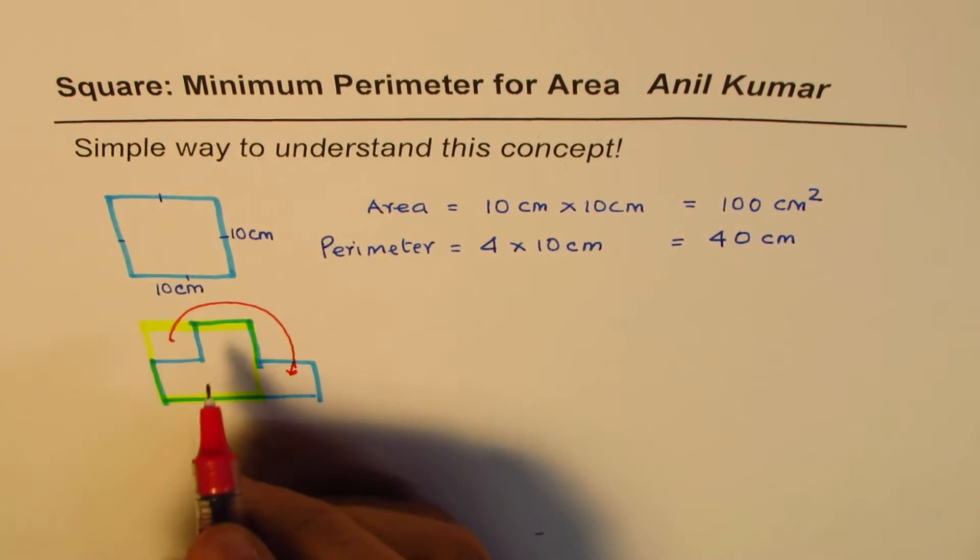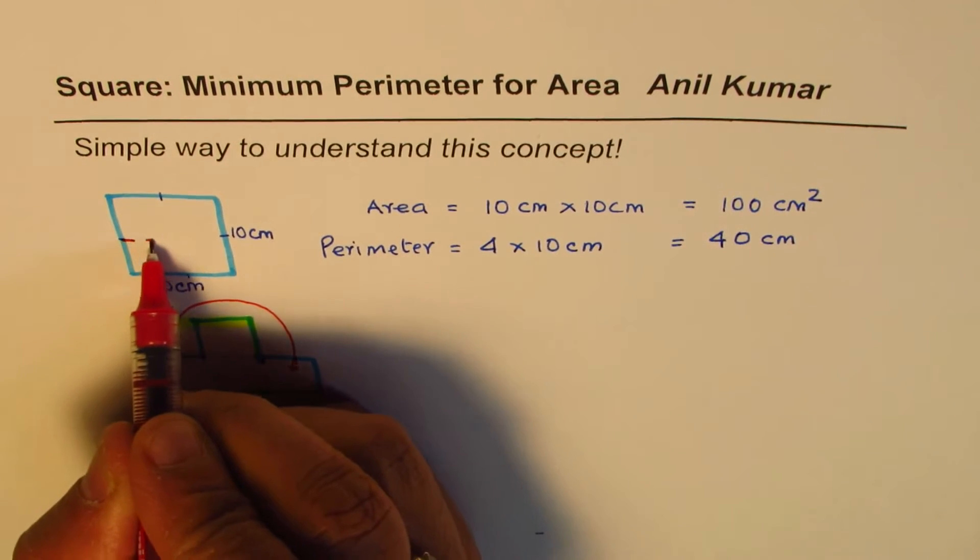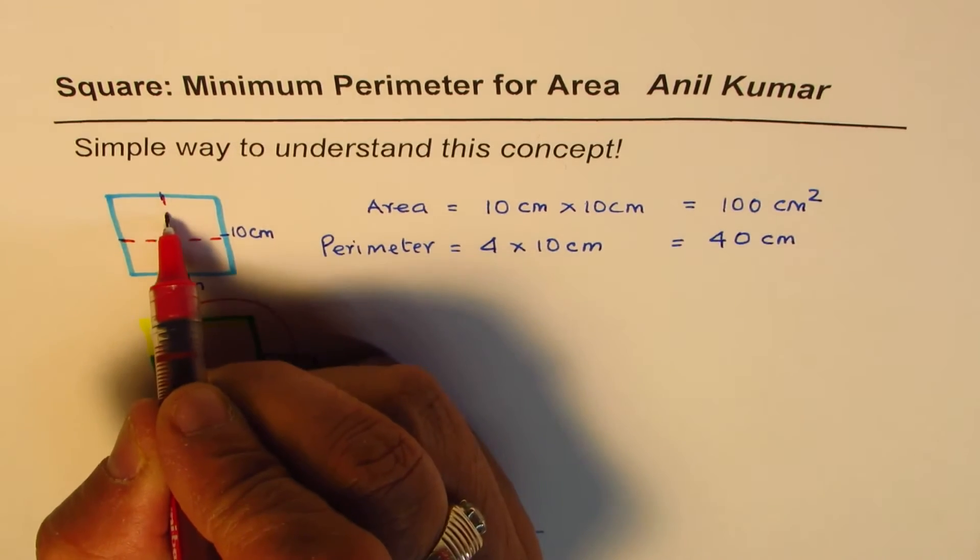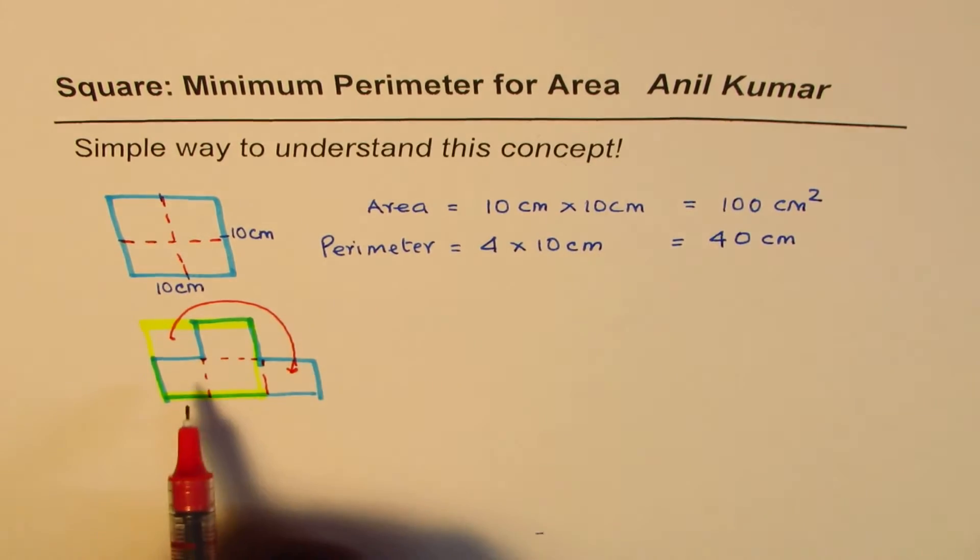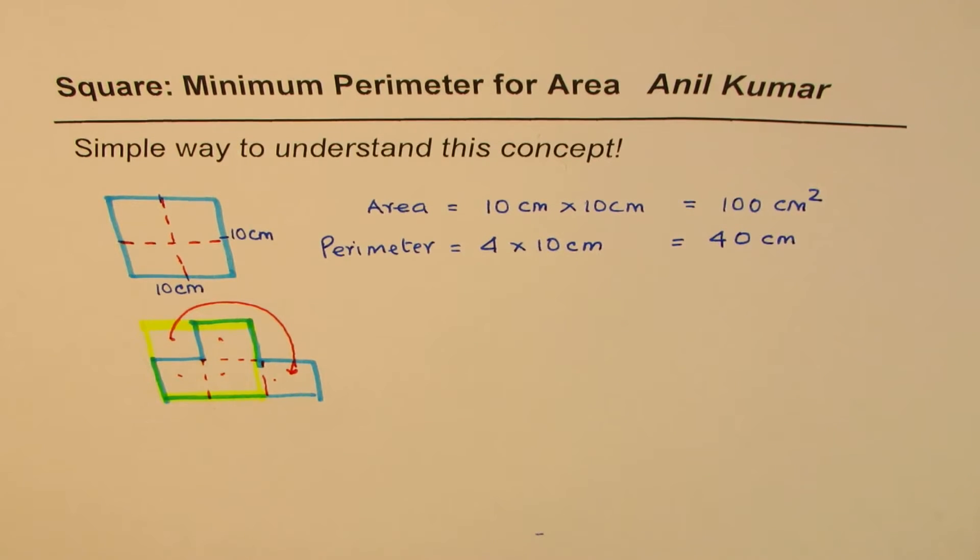Area is still the same. Still we have these four small pieces and you see that, let me divide them into four pieces. Even without calculations: one, two, three, four, all are five by five. Is that okay? So the area is still the same or you can also calculate, no problem.